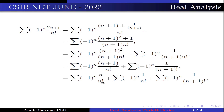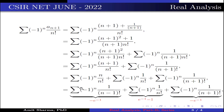Now, taking n common from n!, we get summation (-1)^n · 1/(n-1)!, plus summation (-1)^n · 1/n!, plus summation (-1)^n · 1/(n+1)!. According to our result, the first sum is the expression of -e^(-1), the second becomes e^(-1) - 1, and the third is -e^(-1).